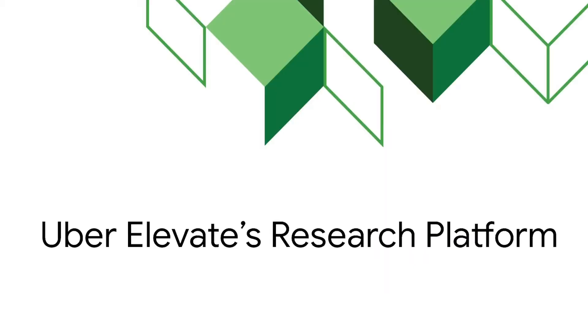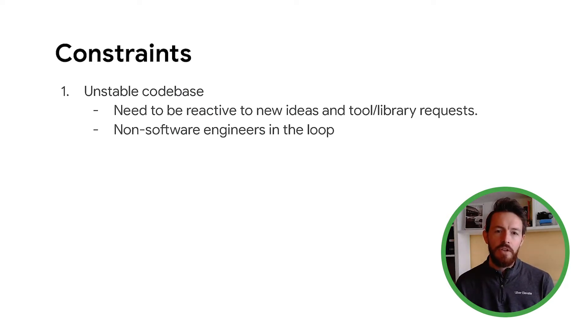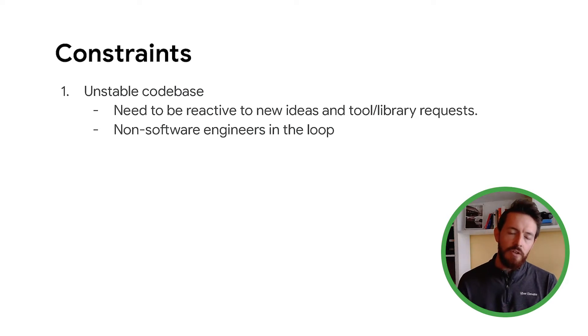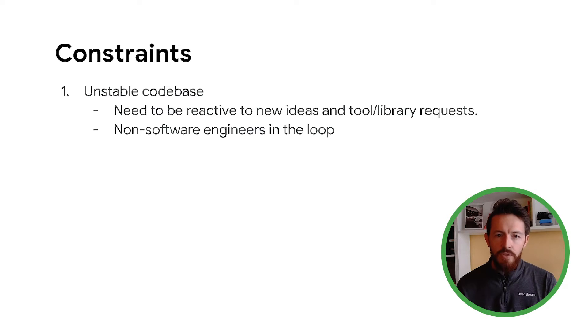Let me talk about the capabilities of Uber Elevate's research platform. When I first started thinking about it a year ago, I tried to identify the specific constraints of research engineering. The first one is that when you write research code, you're constantly interacting with an unstable code base — you need to pick an external repo and build upon it, accommodate requests for new tools and new libraries on an almost daily basis. This is different from traditional software engineering where things are more stable, and you're also interacting with people who are not software engineers, like researchers and interns.